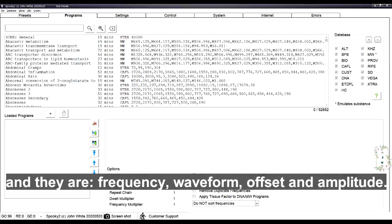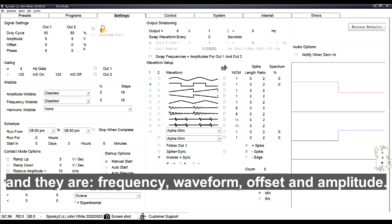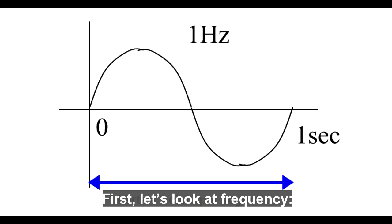First, let's look at frequency. This is a 1 Hertz square wave. It completes one positive to negative cycle every second.